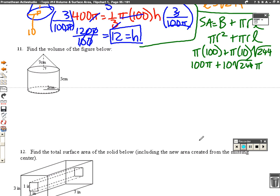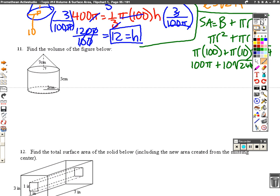Alright, number 11. We want to find the total volume of this figure which is formed by taking a cylinder and a cone and putting them together.